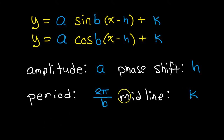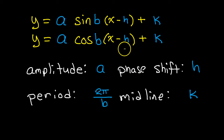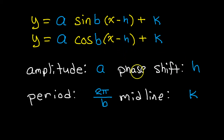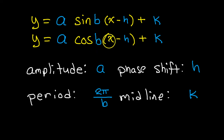Before we look at the actual problems, let me focus on the one thing that students have trouble with: this part in the parentheses — recognizing the phase shift. See how the b value is outside of parentheses.